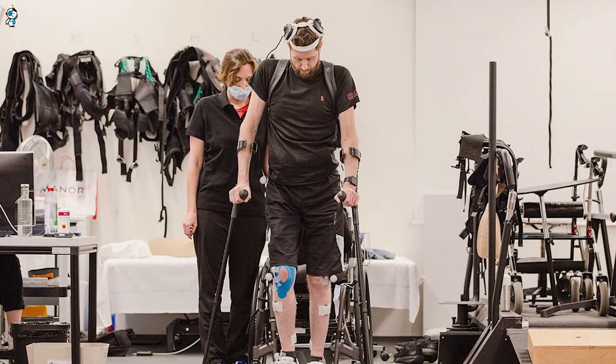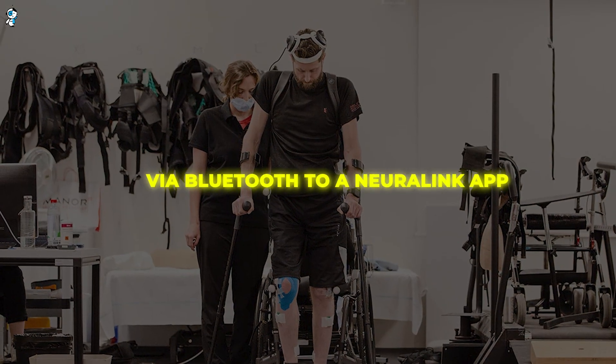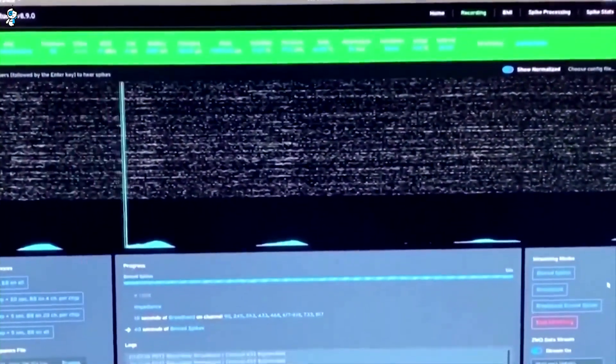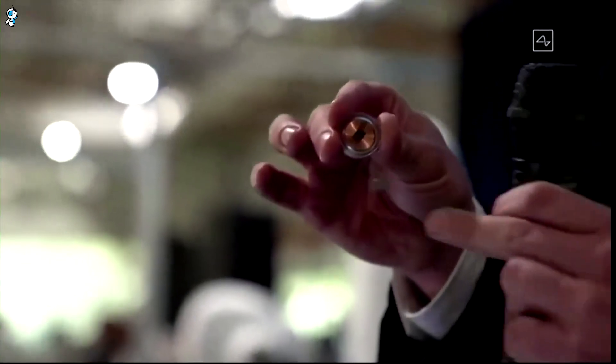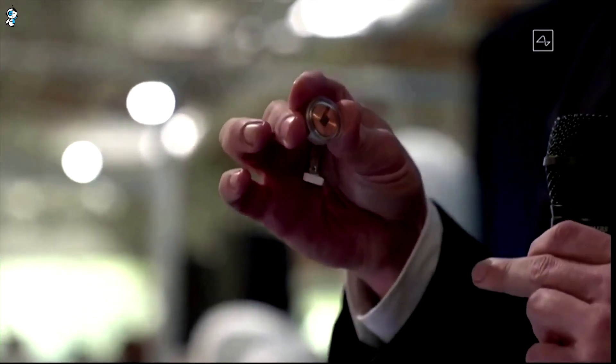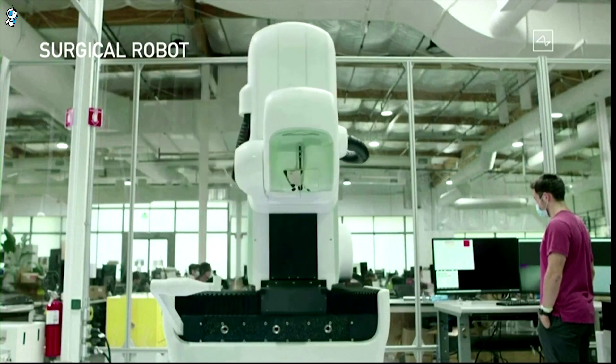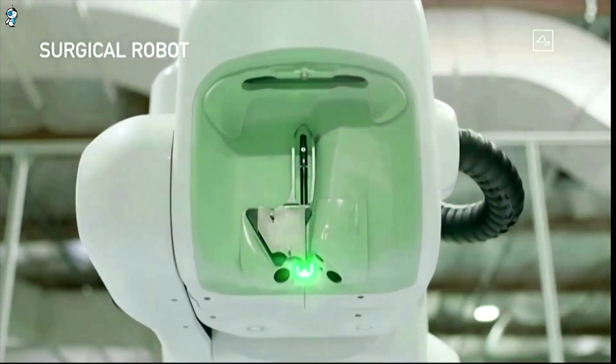It relays these intention signals via Bluetooth to a Neuralink app. Powerful algorithms then translate the signals into commands like clicks and cursors to control digital devices. The R1 ensures the N1 is stitched into exactly the right spot to pick up intention signals.